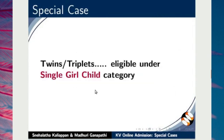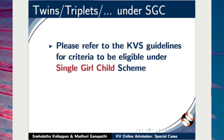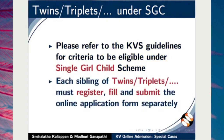Let me demonstrate with a special case: twins, triplets, quadruplets or similar siblings applying under single girl-child category. Please refer to the KVS guidelines for criteria to be eligible under single girl-child scheme. Each sibling of twins, triplets, quadruplets or similar siblings must register, fill and submit the online application form separately.